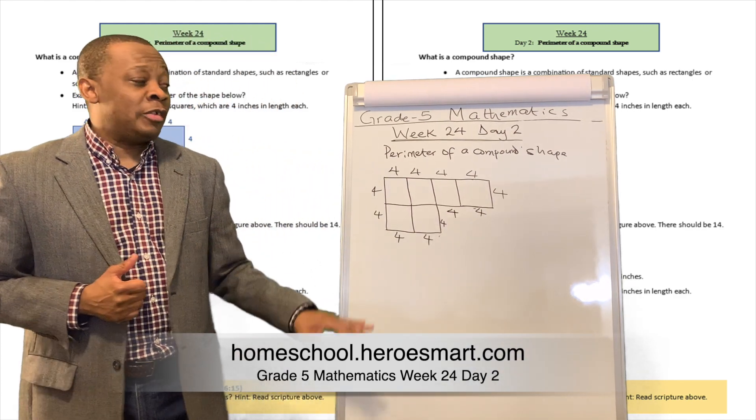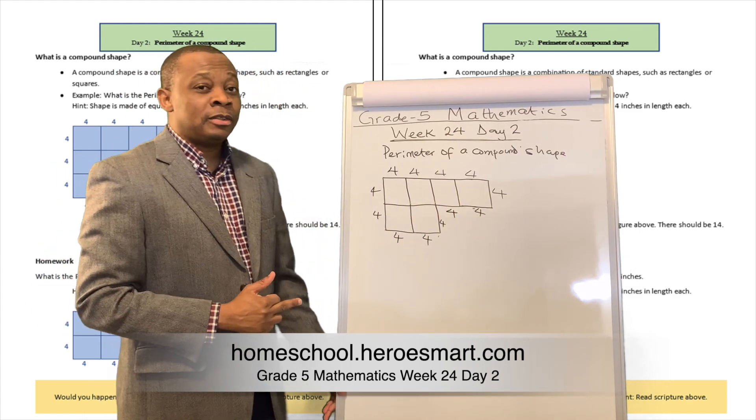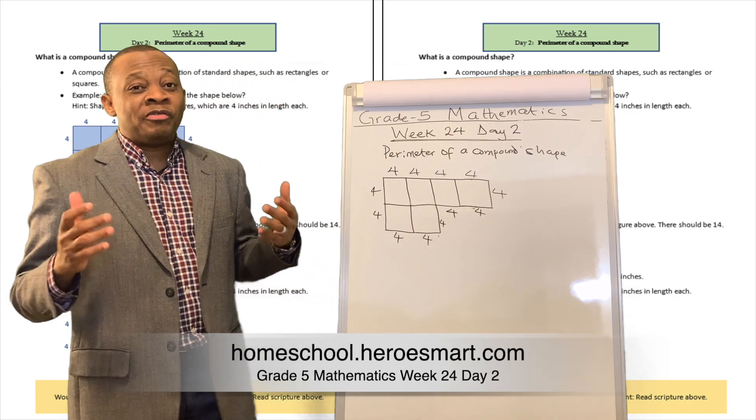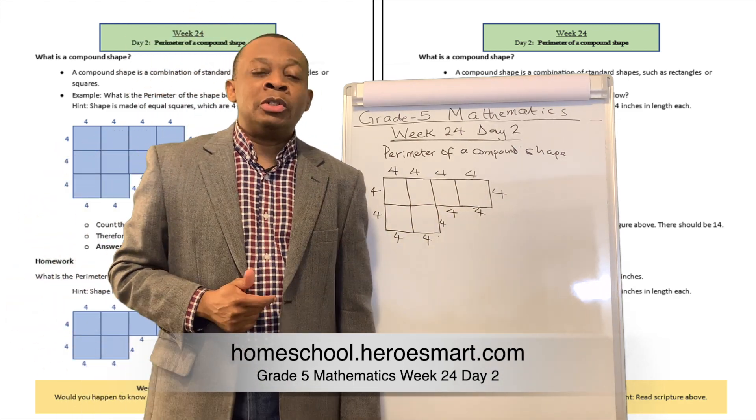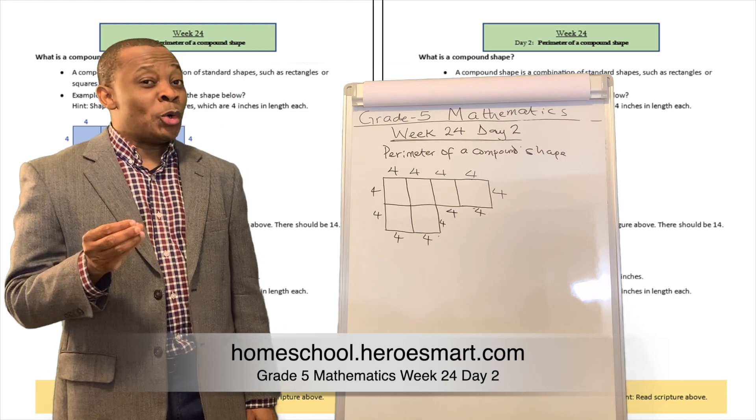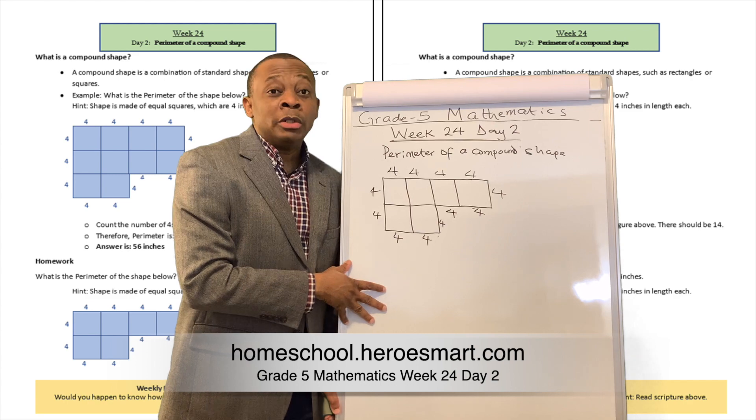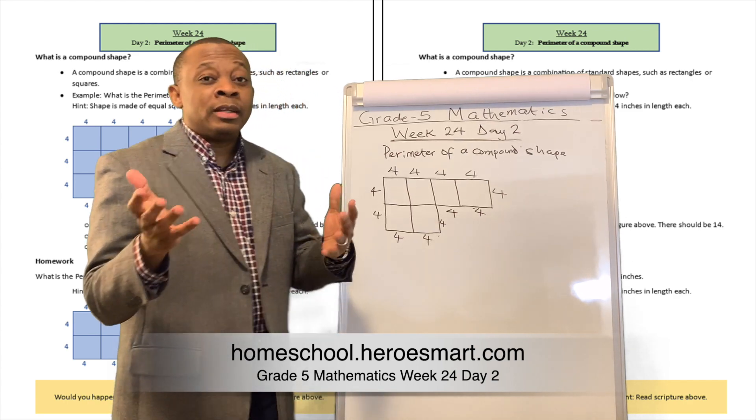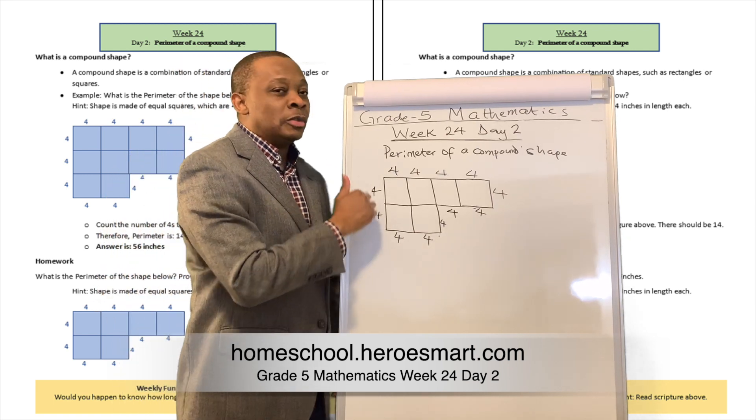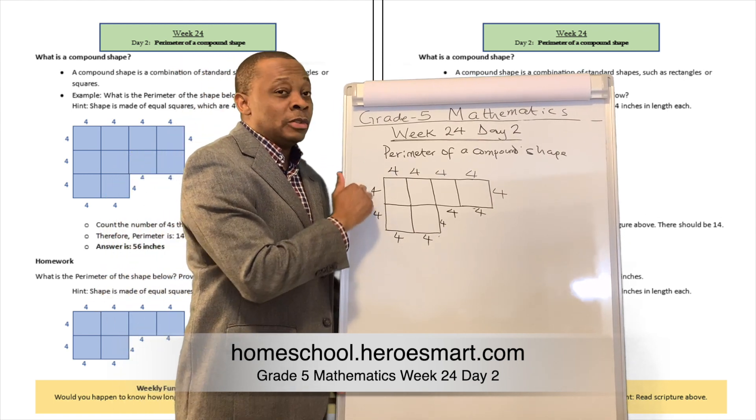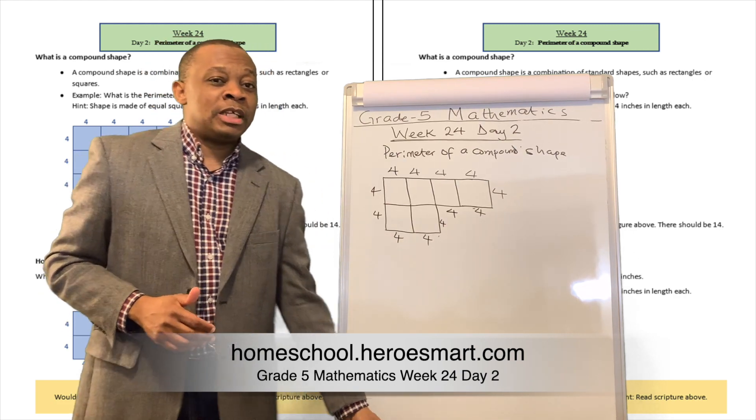So if you have a shape that looks like this, alright, the shape looks like this, and then how do we find its perimeter? Can we use the formula that we talked about yesterday to find its perimeter? Well, the answer is going to be no. We cannot use a formula to calculate the perimeter of a compound shape readily. I mean, you can try to manipulate it, but it's going to be better just to go ahead and add those lines, add those distances together individually to find the perimeter.